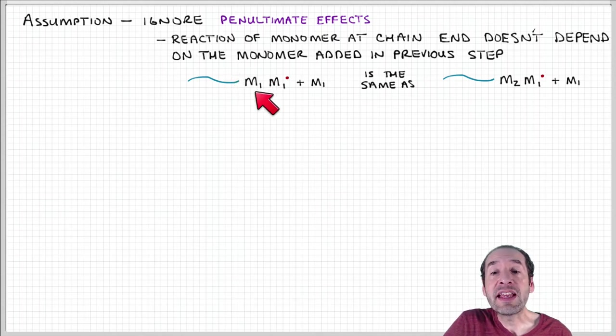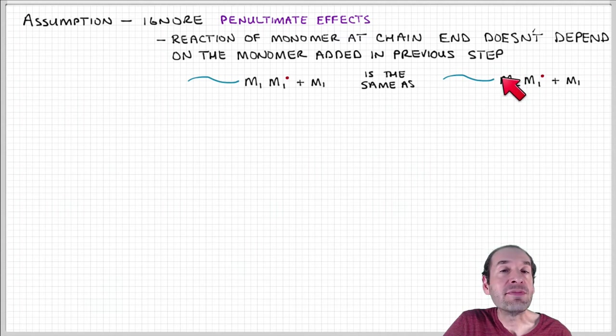In other words, a chain that has an active site on monomer one at the end with monomer one immediately behind it behaves in the same way as a chain with the active site on monomer one, but that has monomer two behind it. We're going to ignore any of these kinds of effects.